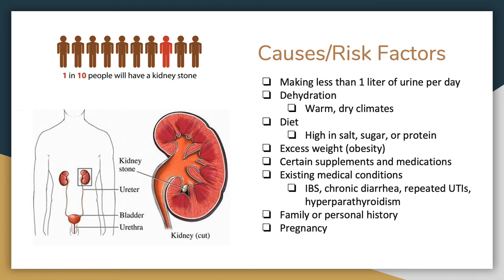One in ten people will develop a kidney stone and some risk factors include making less than one liter of urine every day, dehydration, diet high in salt, sugar, or protein, excess weight or obesity, certain supplements and medications, existing medical conditions such as irritable bowel syndrome, chronic diarrhea, repeated urinary tract infections, and hyperparathyroidism, a family or personal history, and pregnancy. During the later stages of pregnancy, as the growing fetus pushes on the bladder, women may drink less frequently to avoid using the bathroom as much, which can lead to kidney stone formation.